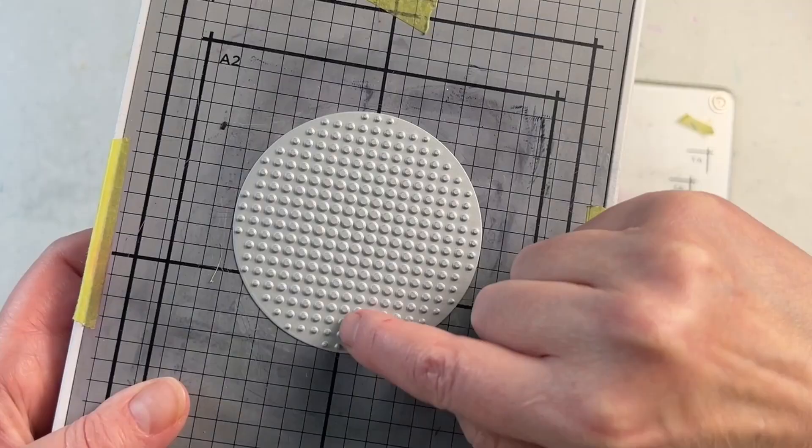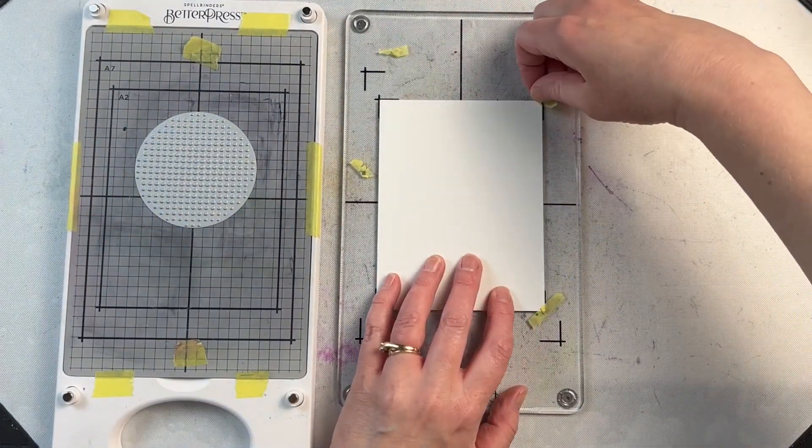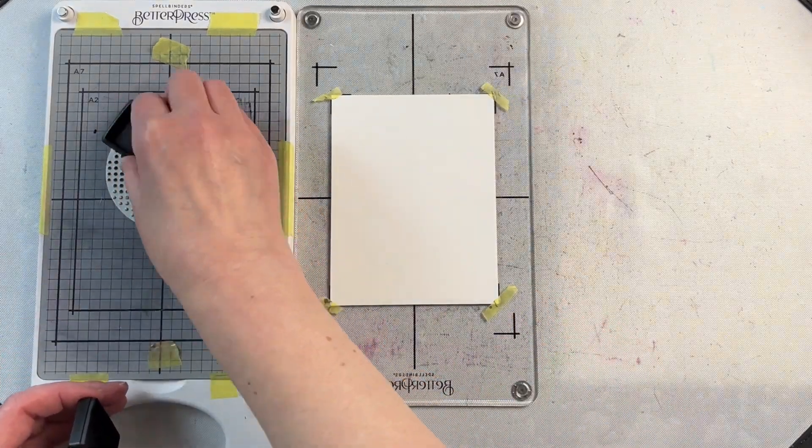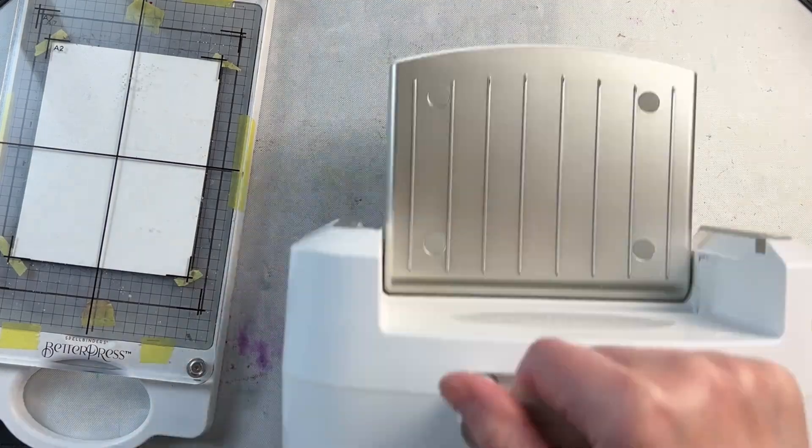The dot pattern is very easy to line up using the grid pattern on the base of the Better Press. I ink it with Better Press ink and put the paper on the clear plate.